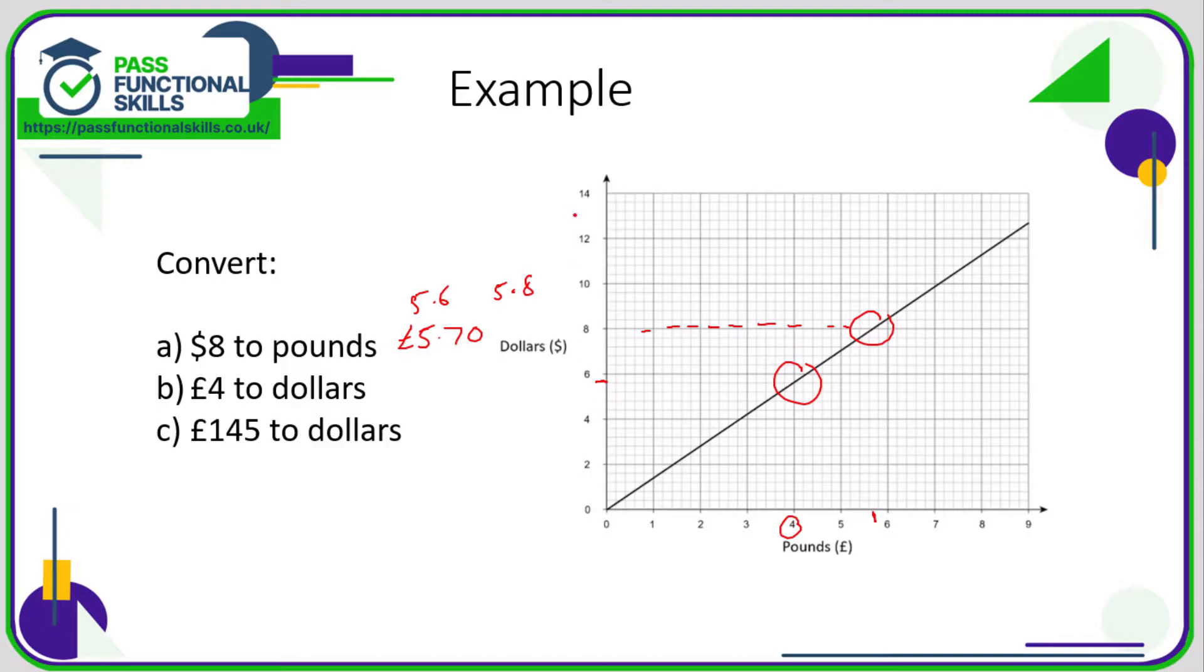The scale on the vertical axis is slightly different than on the horizontal. On the horizontal, for every big line we're going up one, whereas we're going up in twos here. That means every little line or faint line is point four. So four, four point four, four point eight, five point two, five point six—so five dollars sixty.